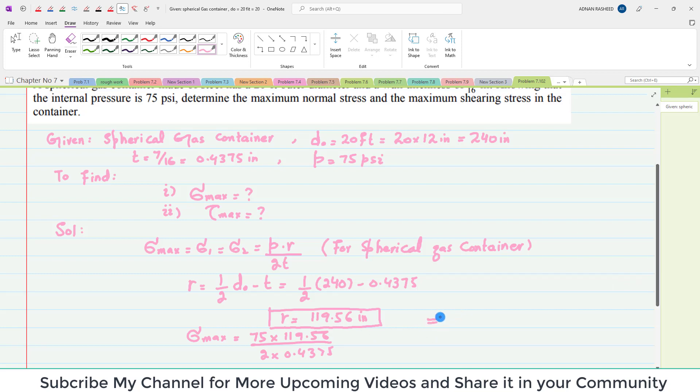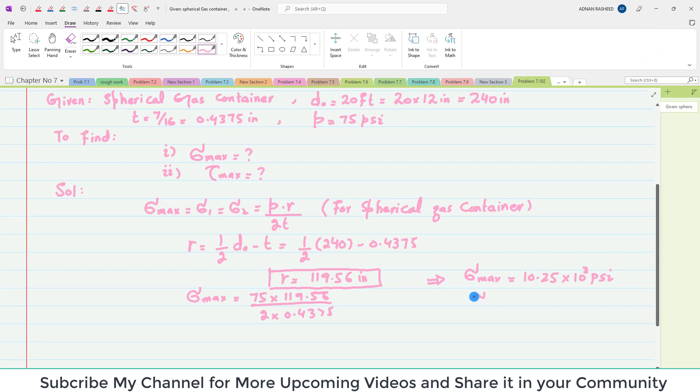When you calculate it, you will get the maximum normal stress equal to 10.25 × 10^3 psi.